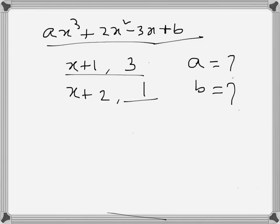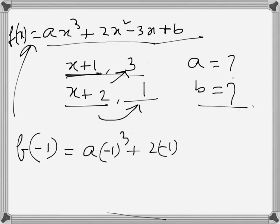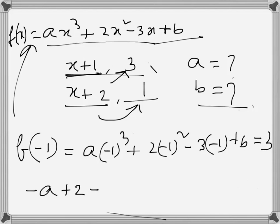When ax³ + 2x² - 3x + b is divided by x + 1 the remainder is 3, and when divided by x + 2 the remainder is 1. We need to find a and b. We can apply the Remainder Theorem, so let's do f(-1). That will be a(-1)³ + 2(-1)² - 3(-1) + b, which equals 3, giving us -a + 2 + 3 + b = 3.